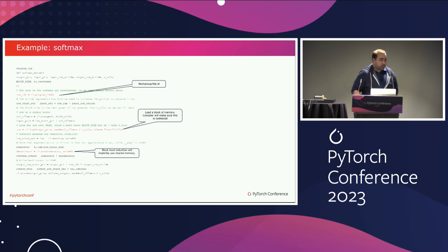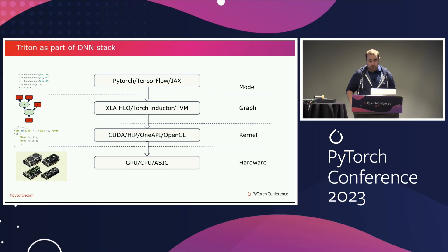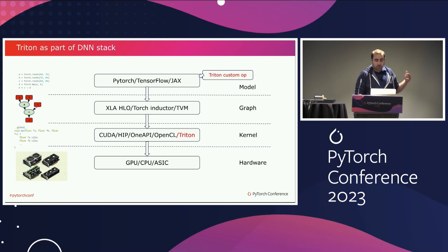After that, let's talk about how Triton could be used in a typical ML compiler stack. Triton itself can be used to write kernels directly, and that's what a lot of people use it for. But it can also be integrated into a full graph compiler stack. Typically, graph compilers break a model graph into kernels which are then implemented using existing languages and executed on hardware. Triton very naturally fits at the kernel level.